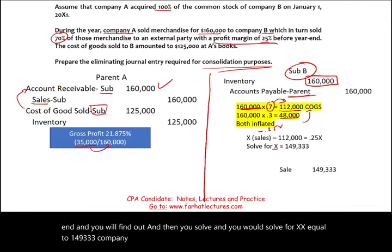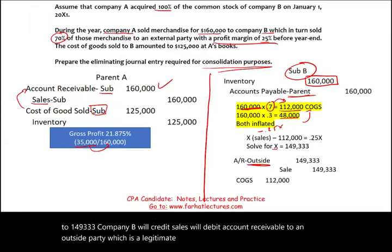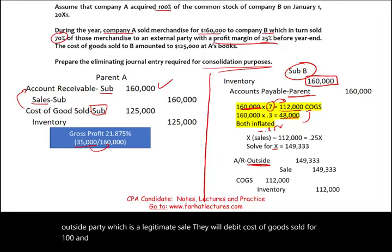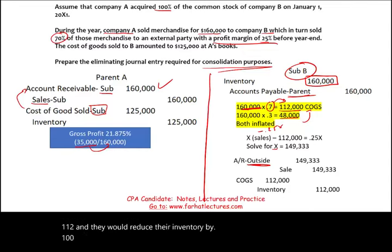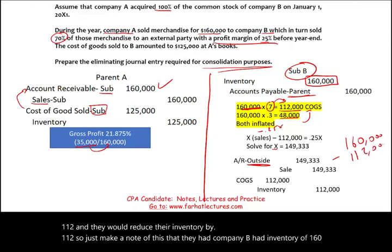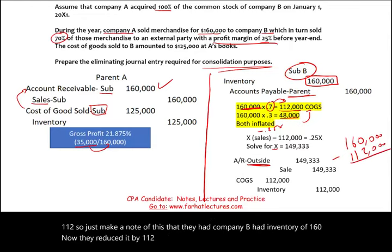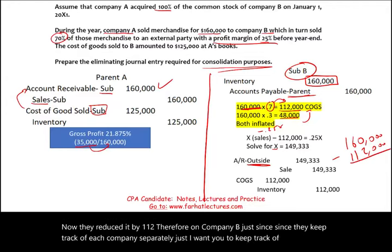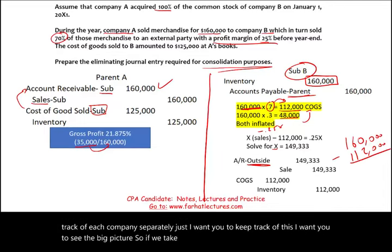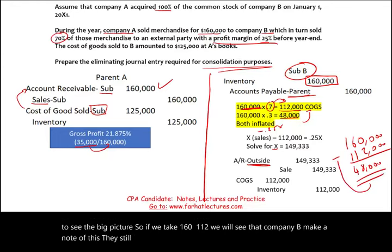Company B originally had inventory of $160,000 and reduced it by $112,000 cost of goods sold. Therefore Company B still has $48,000 of inventory remaining on their books — which is an inflated figure because it includes the parent's markup. We'll take care of that in the eliminating entries.